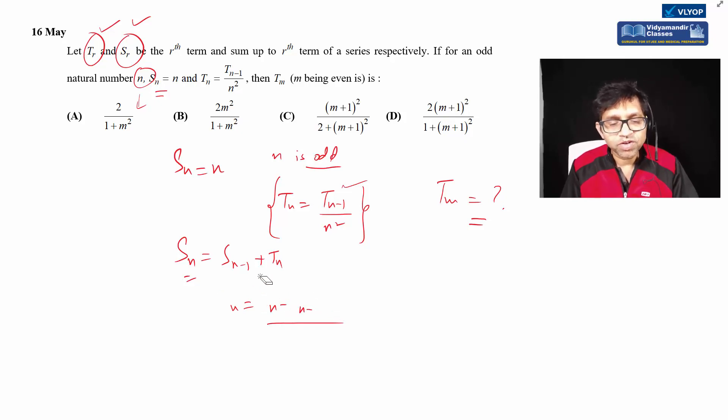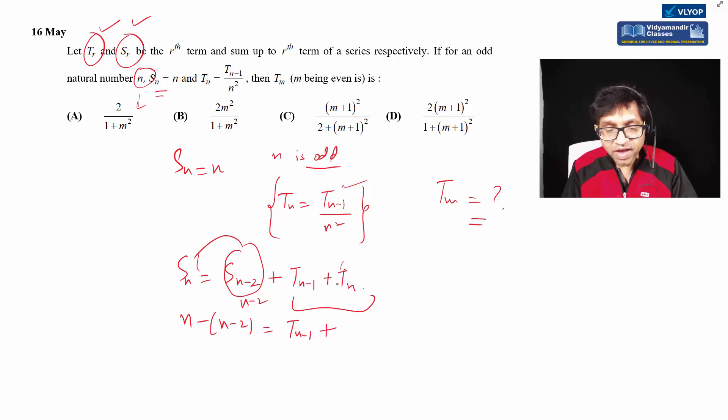What I'll do with sum up to n terms is separate out the last two terms. So I'll have sum up to n minus two terms plus tn minus one plus tn. After this, sn is n given, and sum up to n minus two terms will be n minus two. Subtracting, I get 2 equals tn minus one plus tn. Now this is an odd term and this is an even term, right?